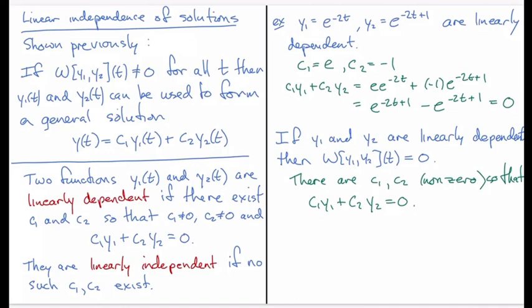And now if I know that c1*y1 plus c2*y2 is equal to 0 and this is for all t, then I can take a derivative of this expression and I get c1*y1 prime plus c2*y2 prime also is equal to 0.